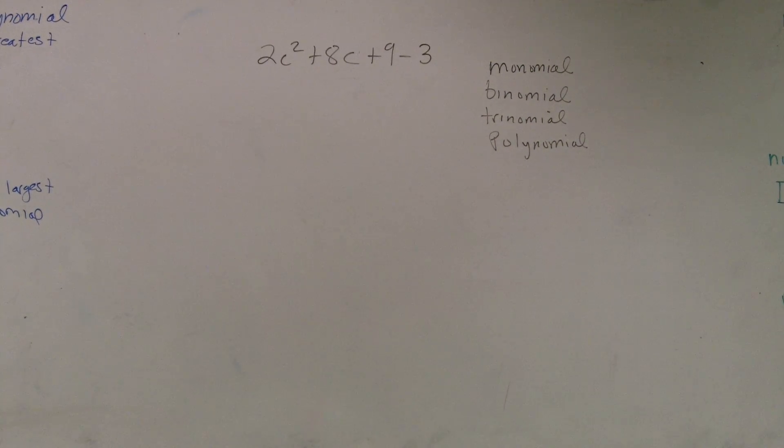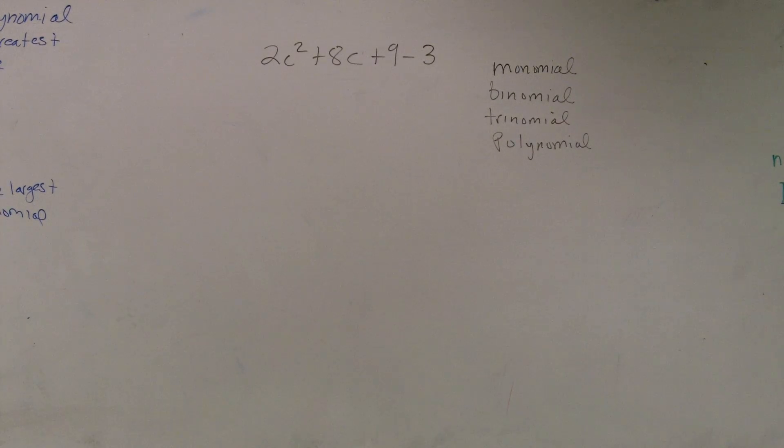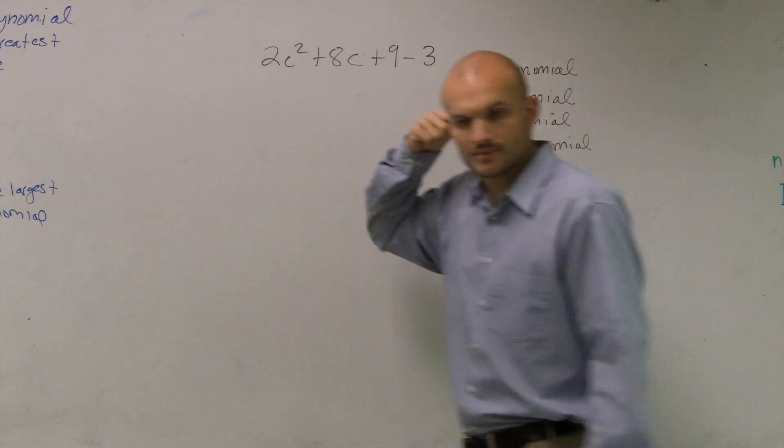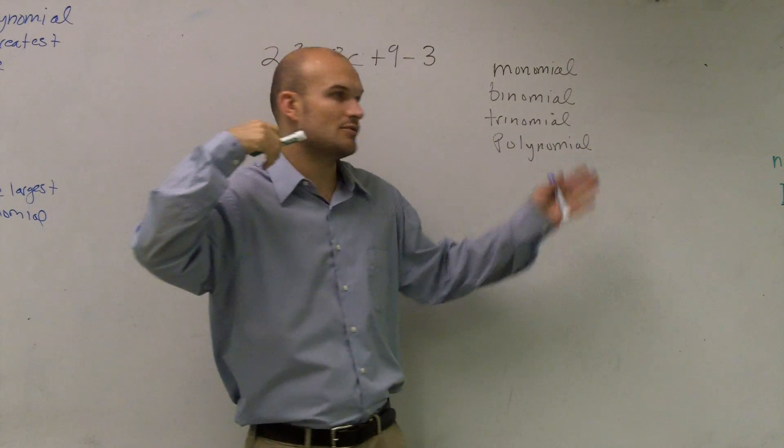Remember guys, we talked about a monomial being a multiplication of a number and a variable, or a number with a positive exponent.